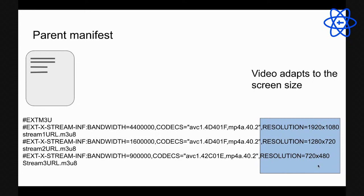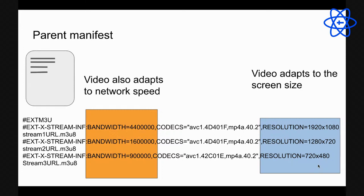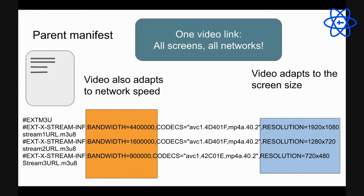The player can also adapt to network speed. Even on a large screen with a slow network, the player can drop to a lower resolution but still stream. So with one video link, it works on all screens and all networks — video streaming is the way to go if you want responsiveness across all devices.